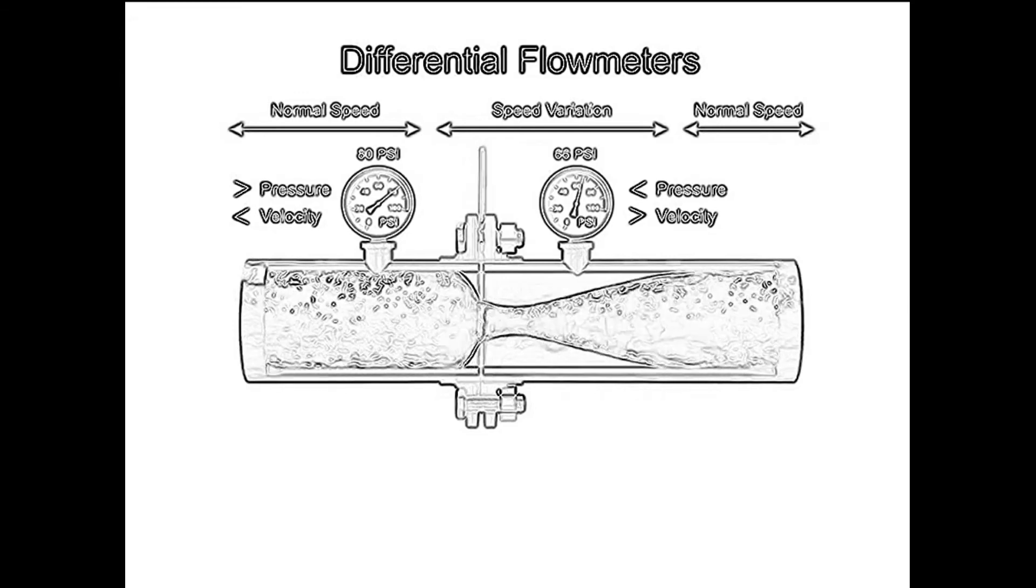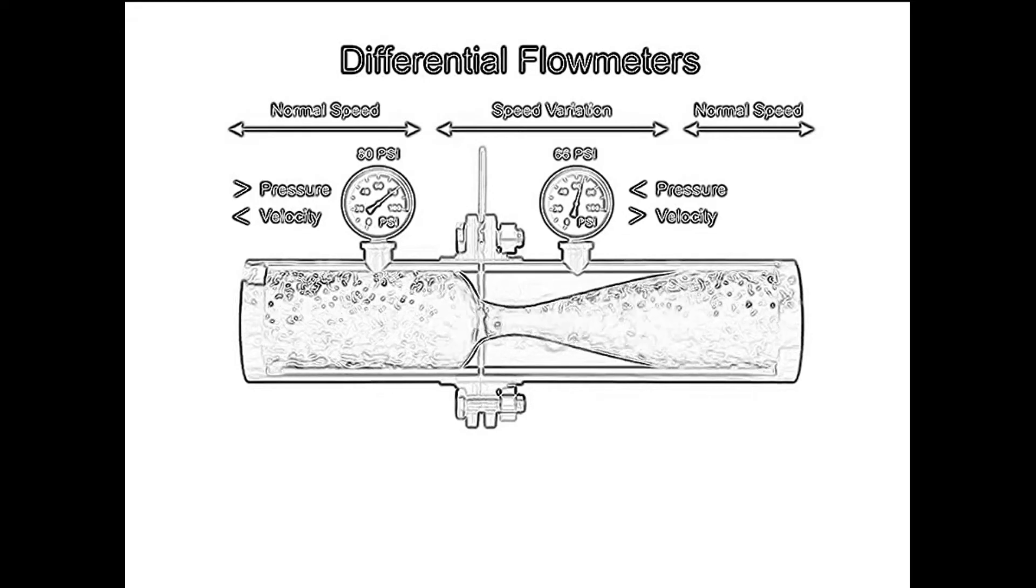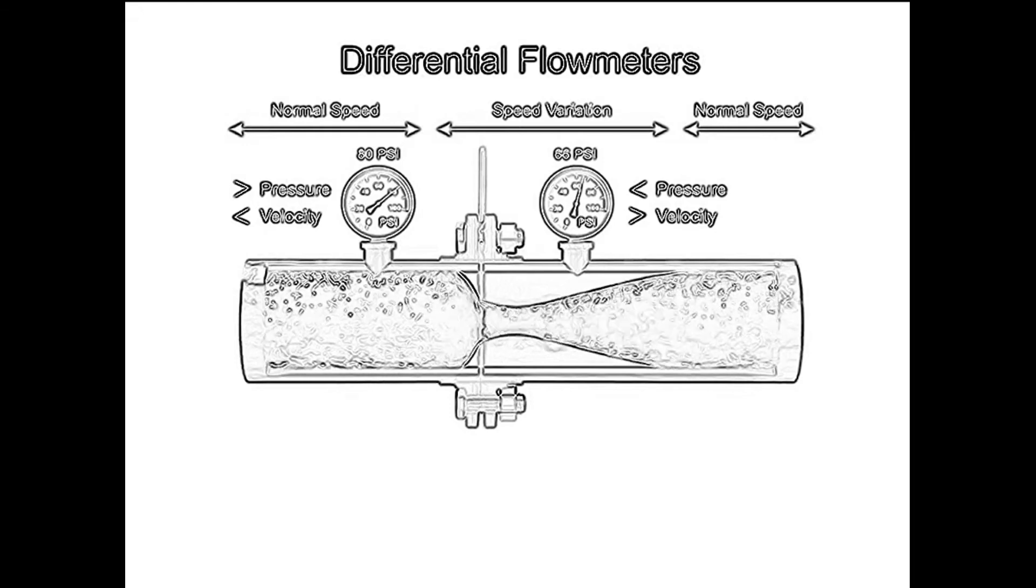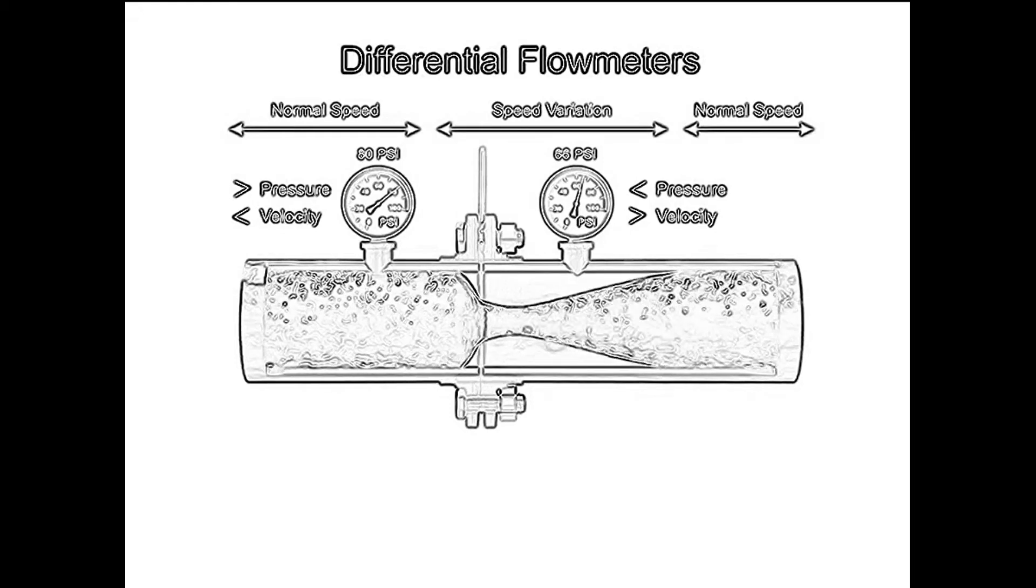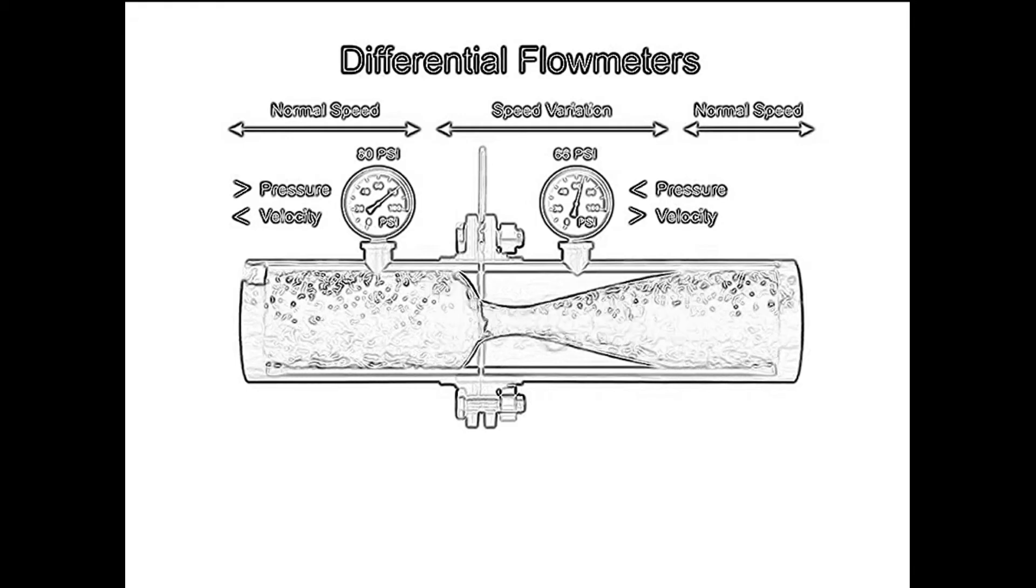The pressure of the fluid at the downstream side of the orifice plate is less than the incoming side due to the accelerated flow. With a known differential pressure and velocity of the fluid, the volumetric flow rate can be determined.